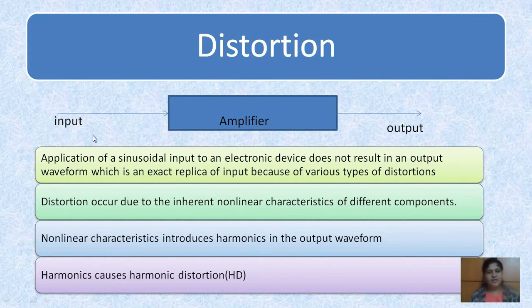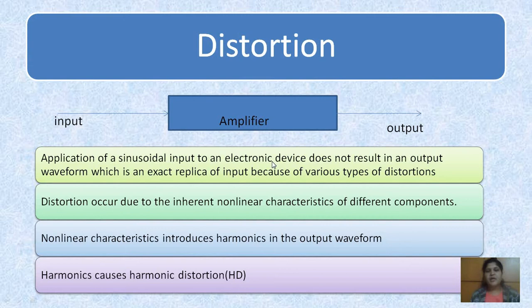Suppose we are giving the input as a sinusoidal input waveform and the output will be a non-sinusoidal signal or any other signal, then we call it as distortion. Application of a sinusoidal input to an electronic device does not result in an output waveform which is an exact replica of the input, because of various types of distortions.